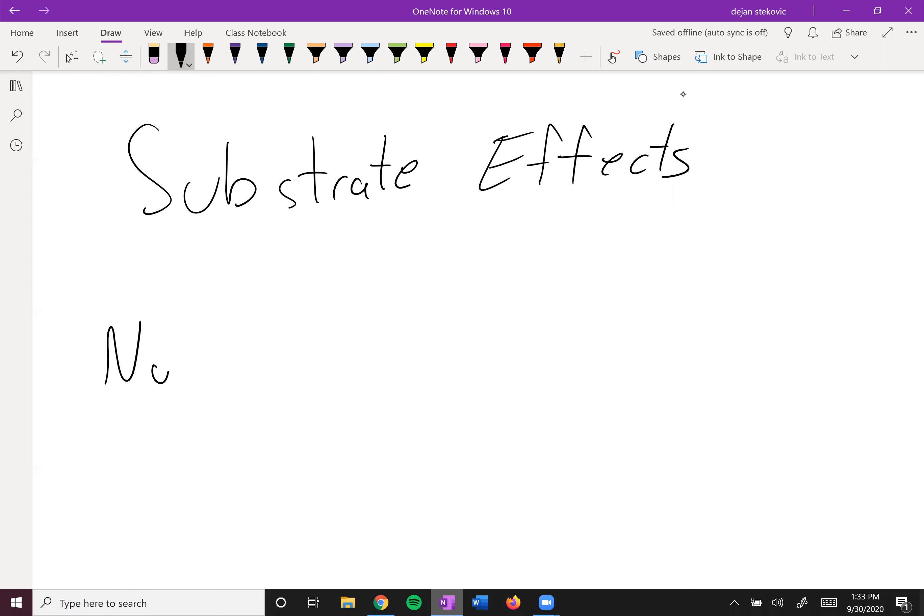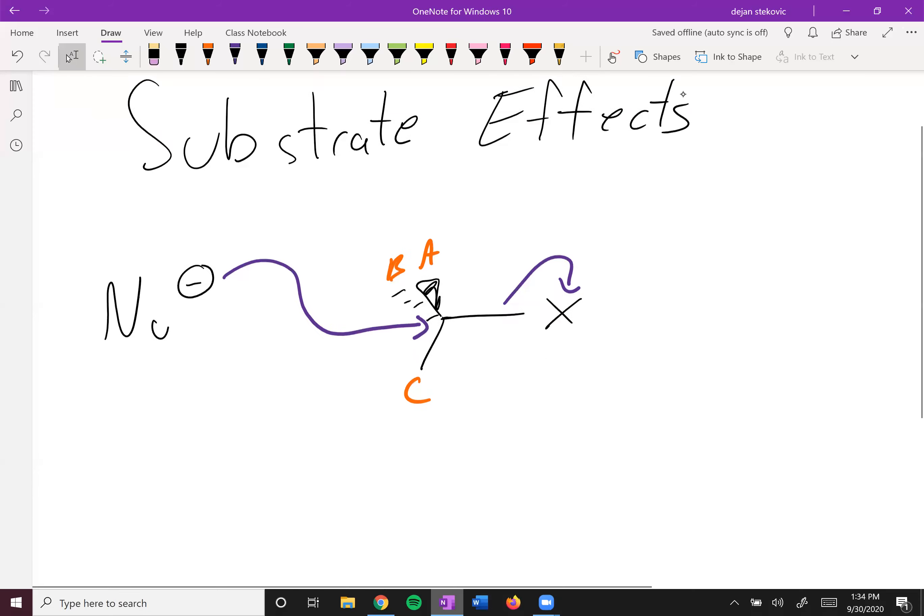Remember what we have here is a nucleophile attacking some kind of electrophile from the back. So let's call these substituents A, B, and C, doesn't really matter. You have this backside attack and then breaking of this bond.